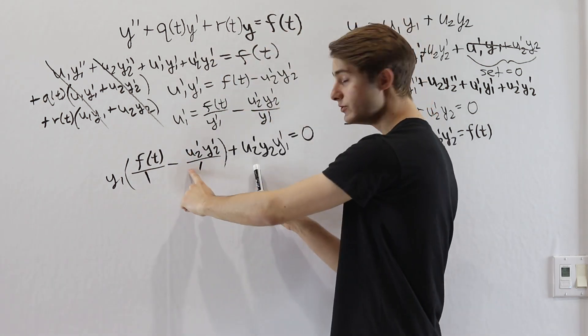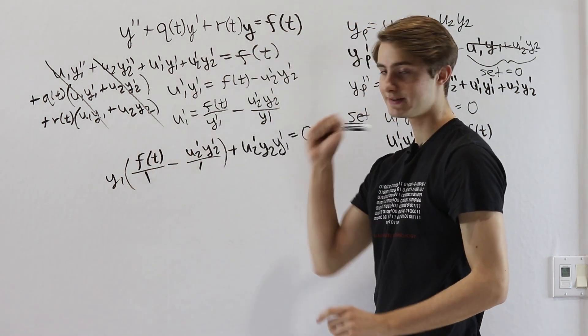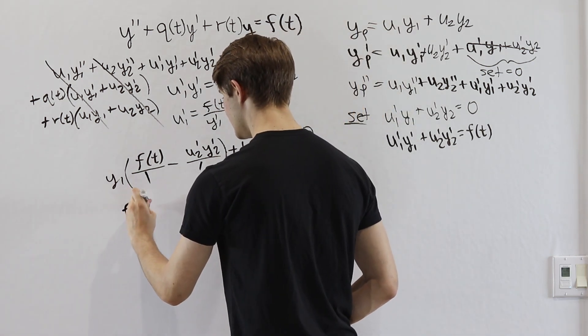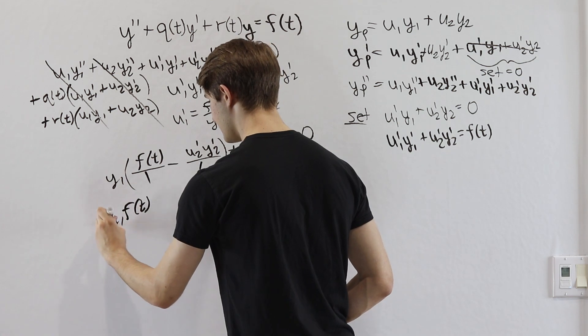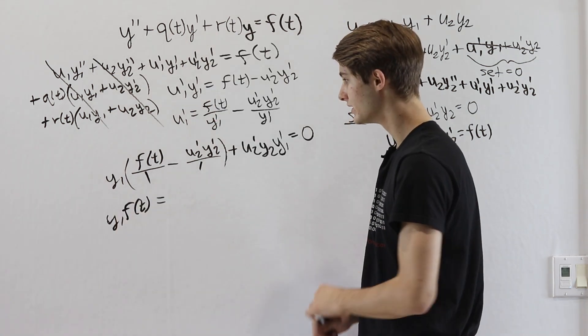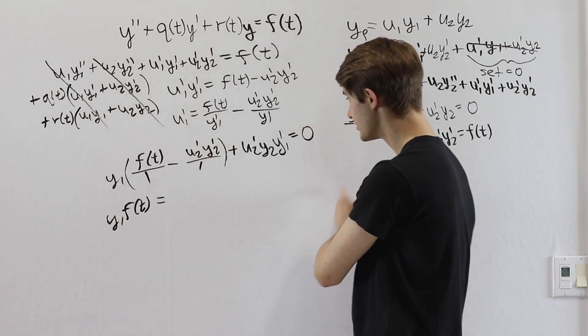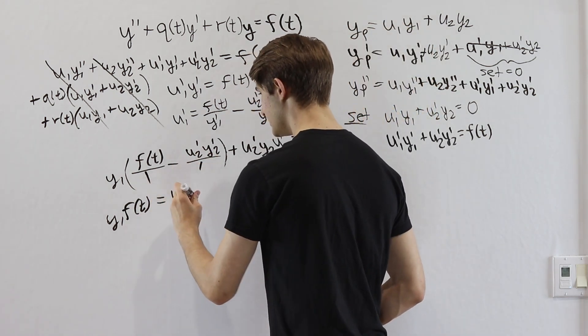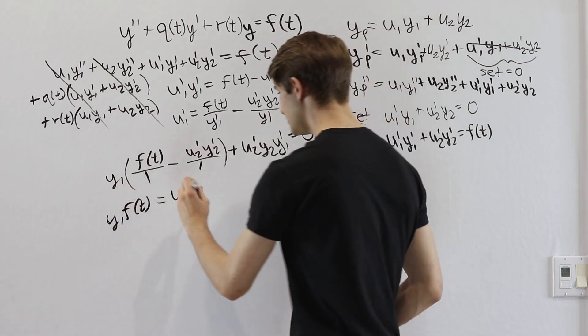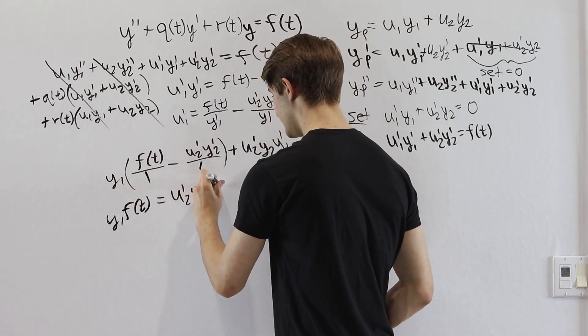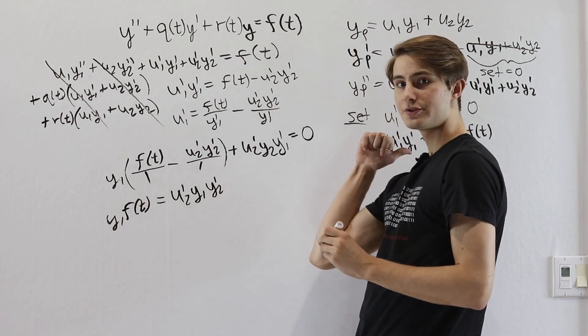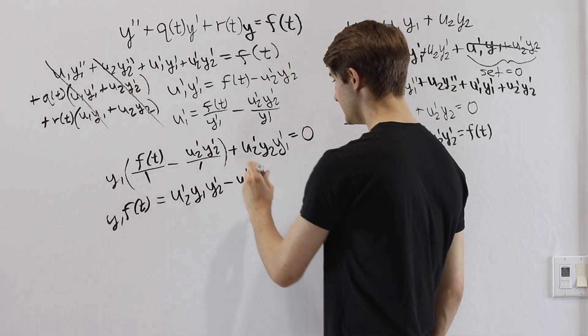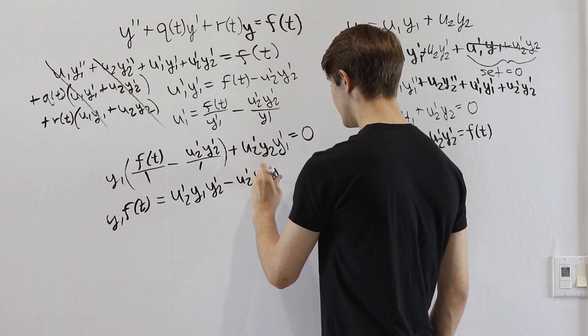Now we're going to move everything with u2 prime in it over to the right side of the equation. So on the left side, we're just going to be left with f(t) times y1. So on the right side of the equation, when we move this negative over to the right-hand side, it'll be a positive. And then we're going to have a u2 prime times, this y1 stays, y1 times y2 prime. And then this positive moved to the right side will be a minus u2 prime and then we have a y2y1 prime.